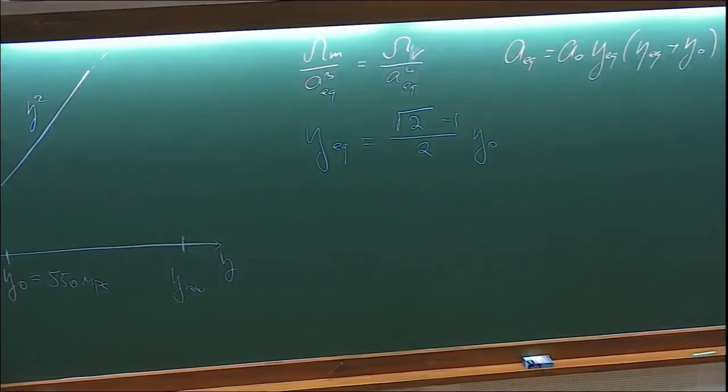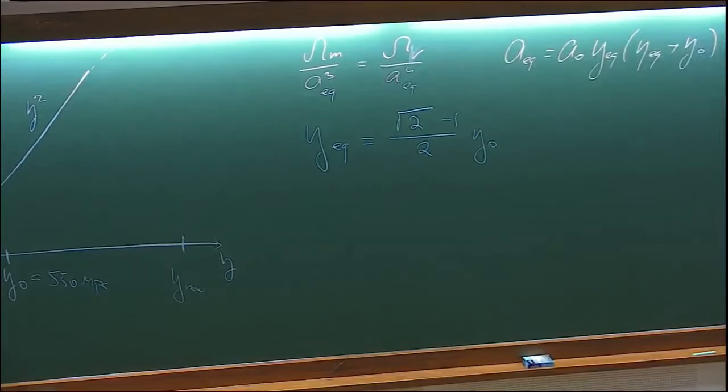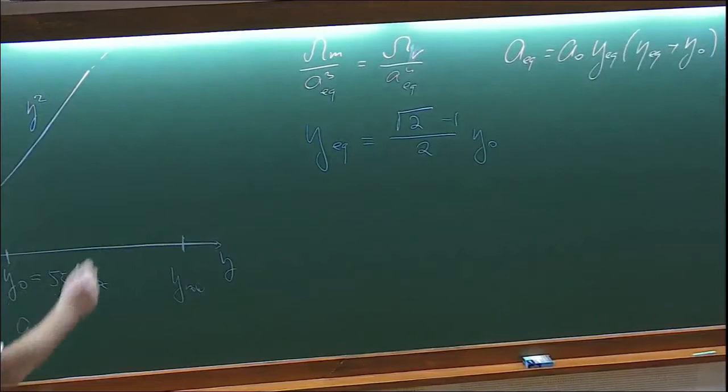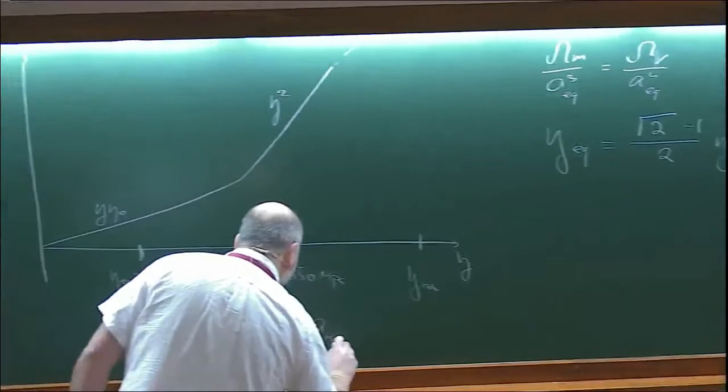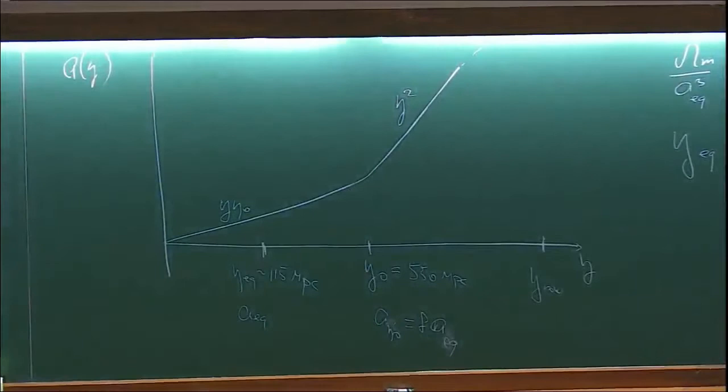Note that eta-zero is not exactly the scale when the two energy densities are equal. The equality scale is defined by A-zero times eta-equality times (eta-equality plus eta-zero) equals omega-R over omega-M. Solving this gives eta-equality approximately equal to (square root of two minus one) over two times eta-zero — almost a factor of five smaller than eta-zero — corresponding to roughly 115 megaparsecs. The ratio of the scale factor at eta-zero to that at eta-equality turns out to be exactly eight.